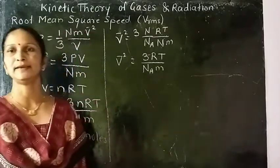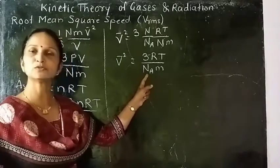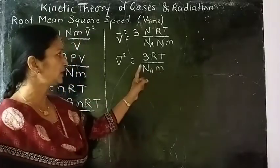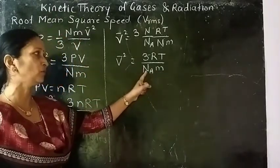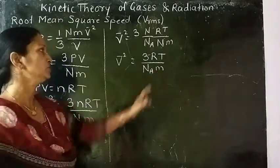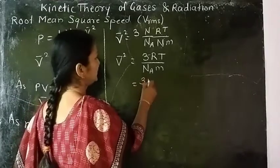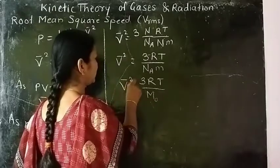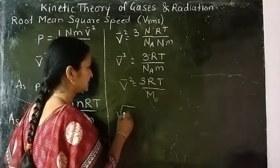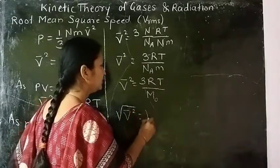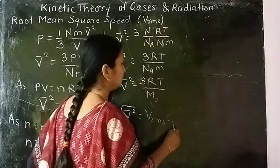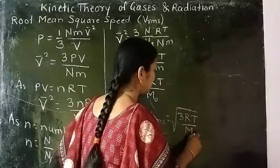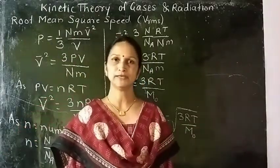So N_A is Avogadro's number — number of molecules per mole — multiplied by the mass of each molecule, which is nothing but the molar mass of gas, M₀. So v-bar² = 3RT / M₀. Taking the square root, we get V_RMS = √(3RT / M₀). This is the expression for RMS speed of gas molecules.